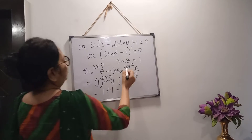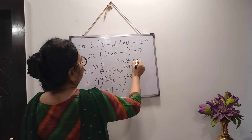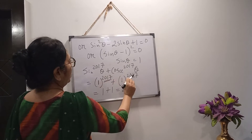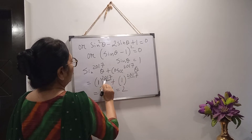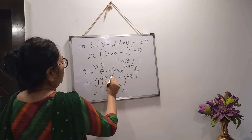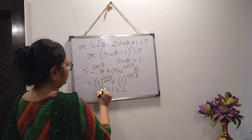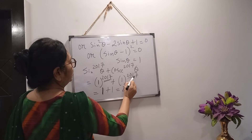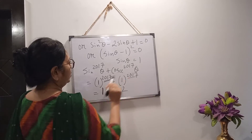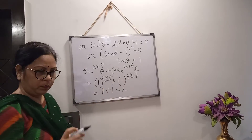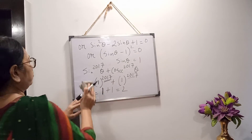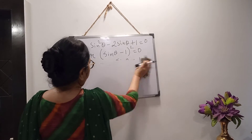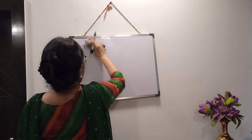But if sin θ becomes negative, you have to check whether the power is odd or even. If the power is even, you will get a positive value. But if the power is odd, a negative value will come. From your book, find the same type of sum and calculate.